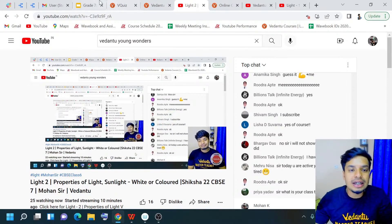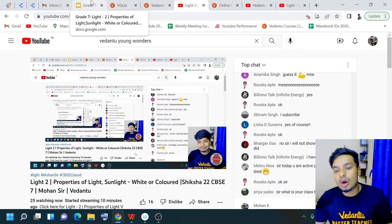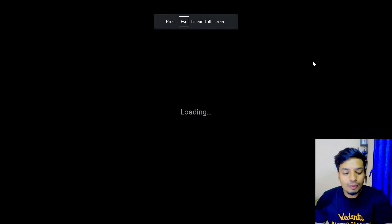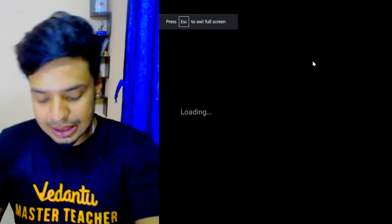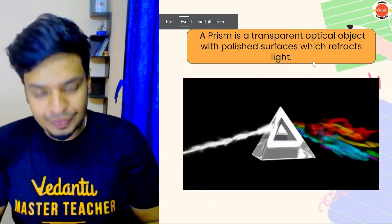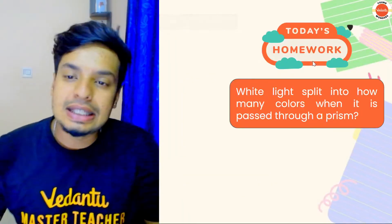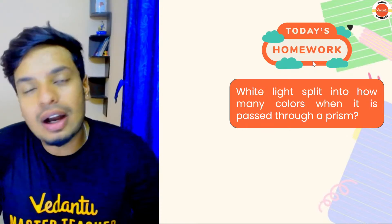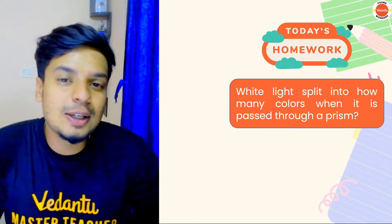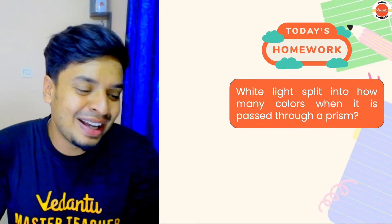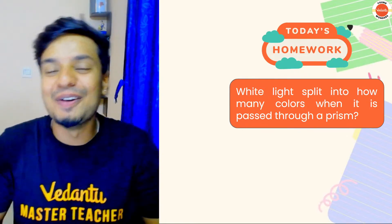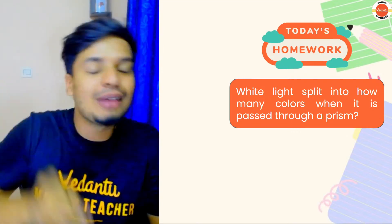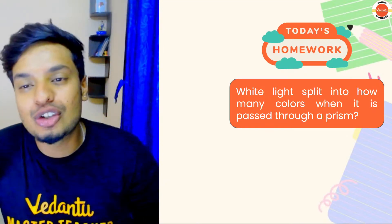Now it's time for today's homework. The homework question for today is: white light splits into how many colors when it passes through a prism? Make sure that you all comment the answer in the comment section.